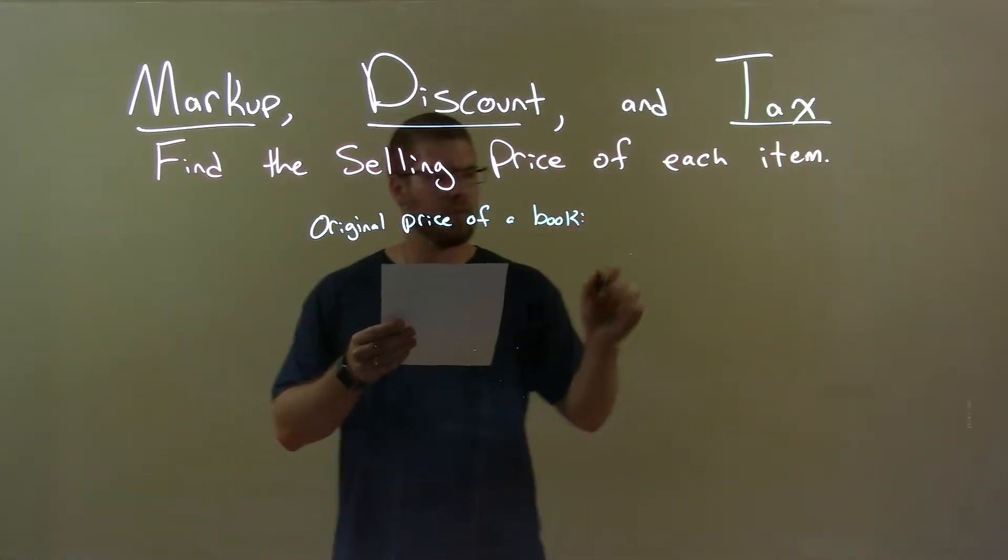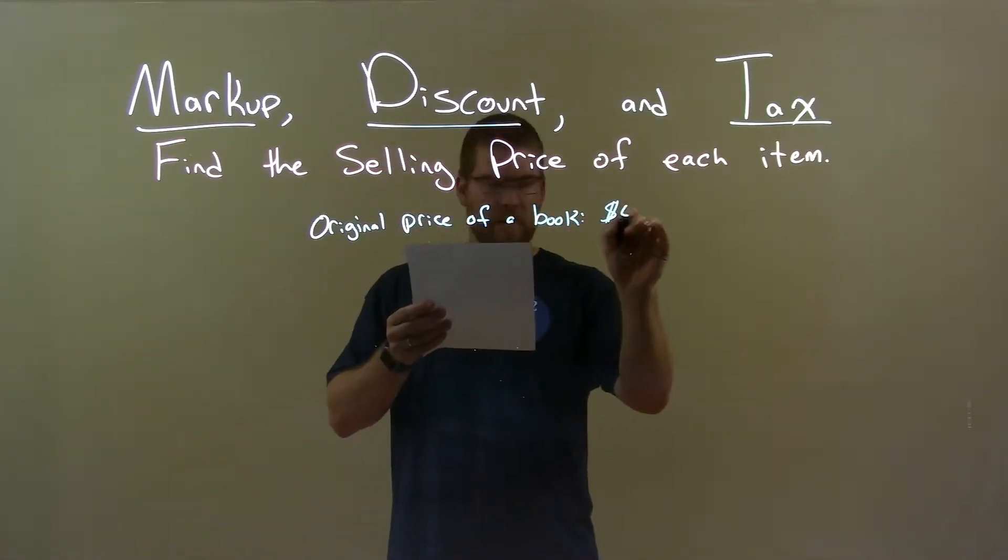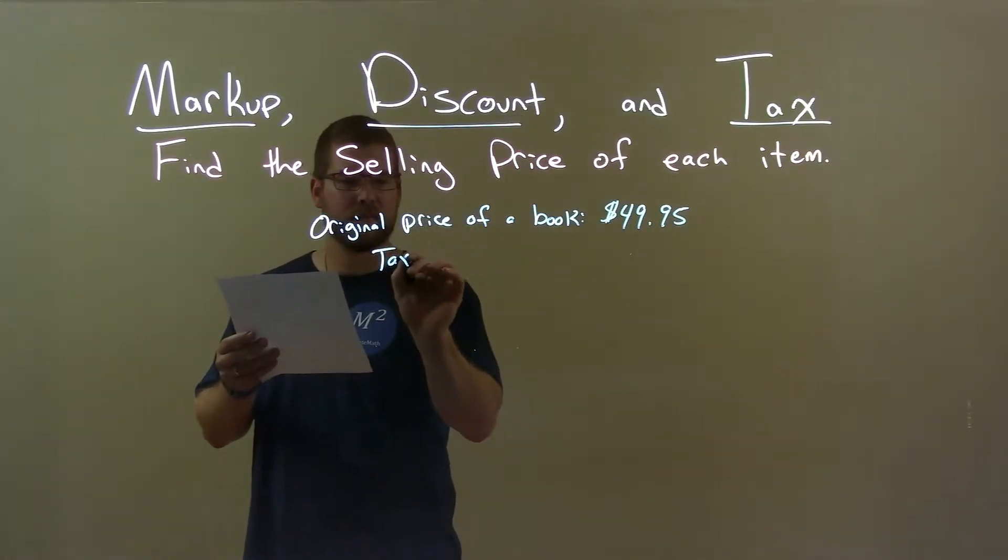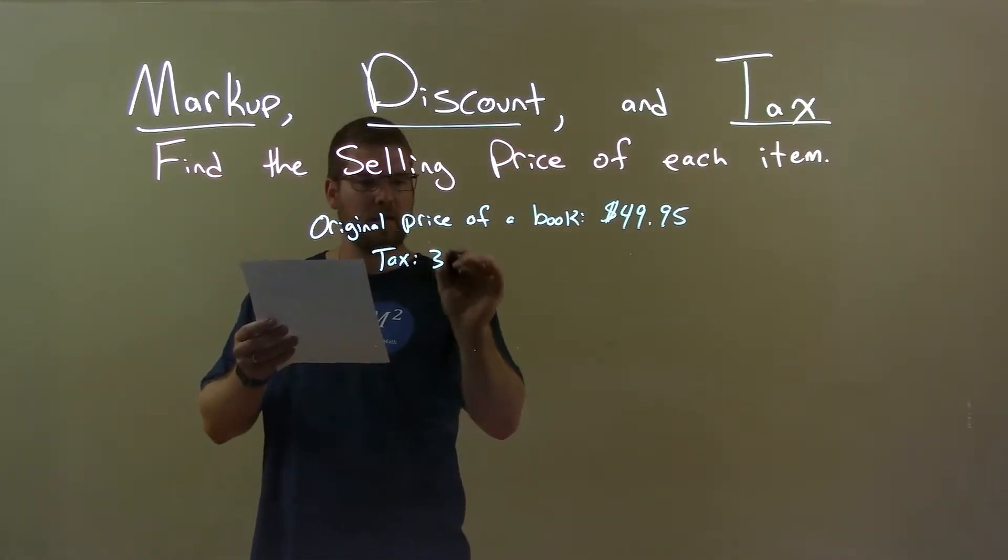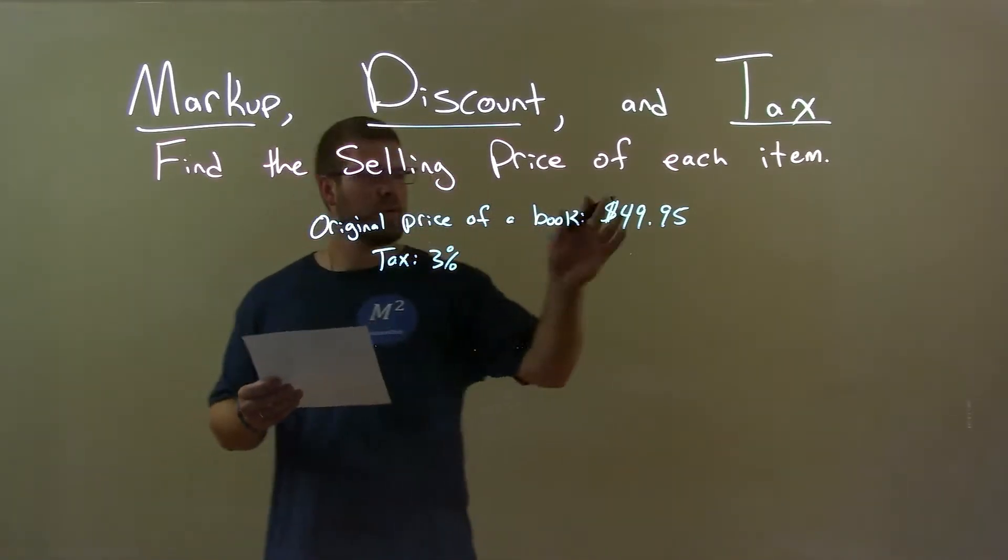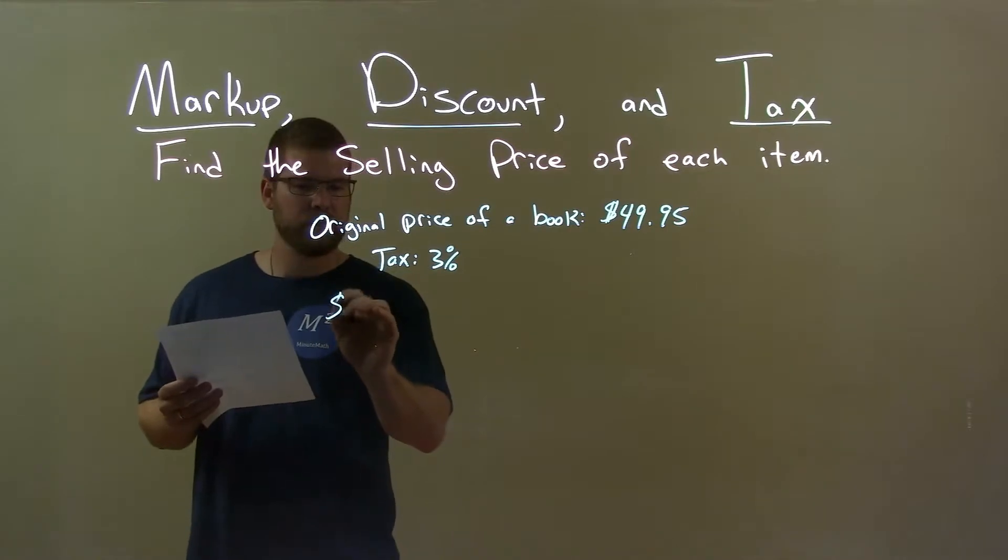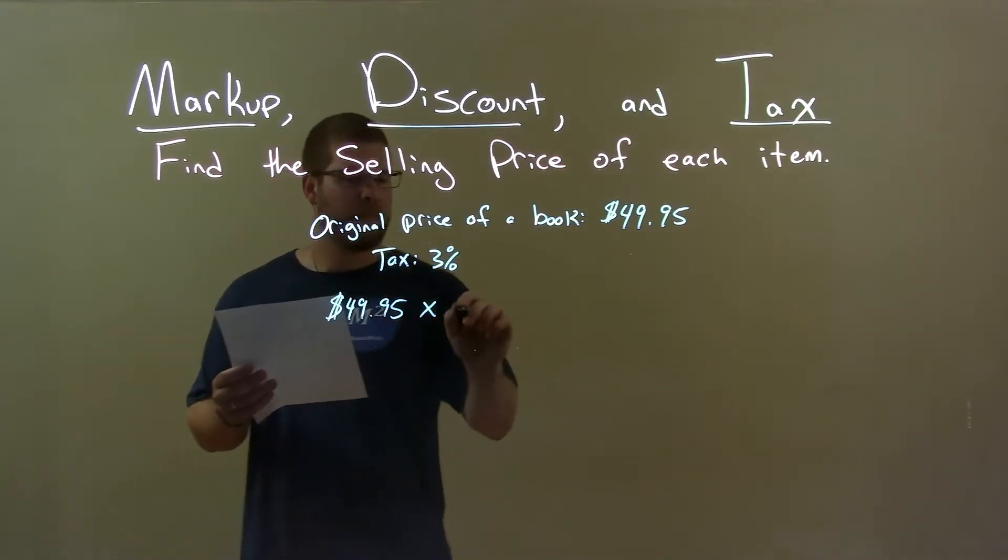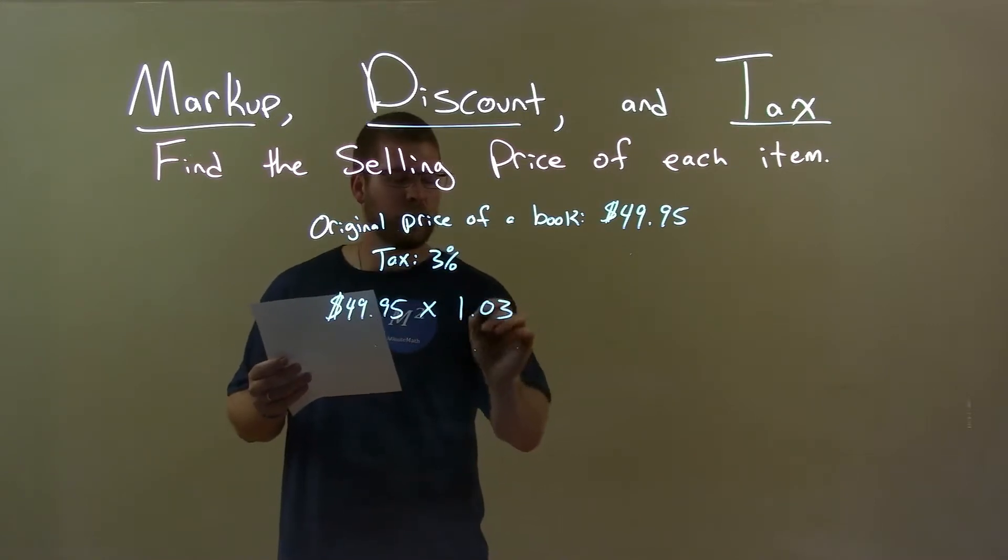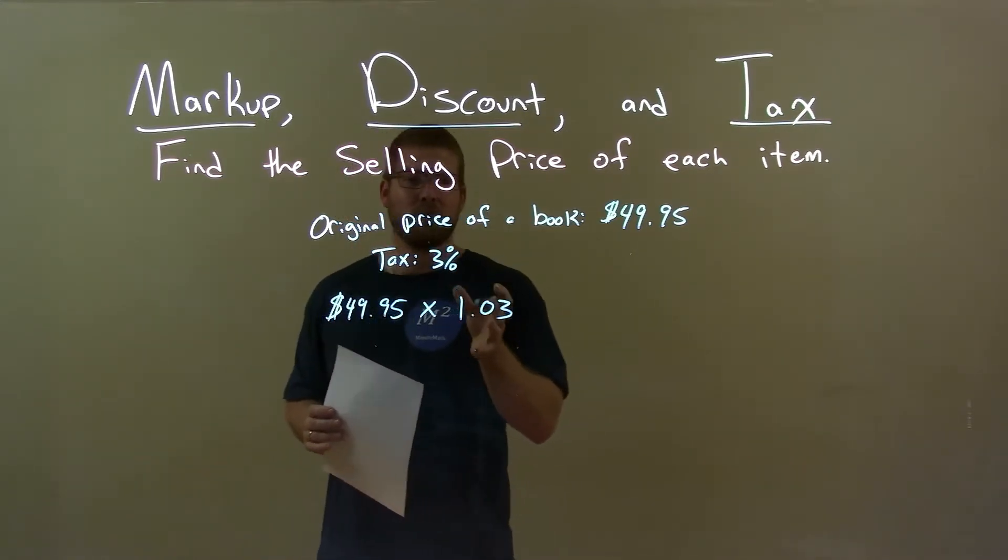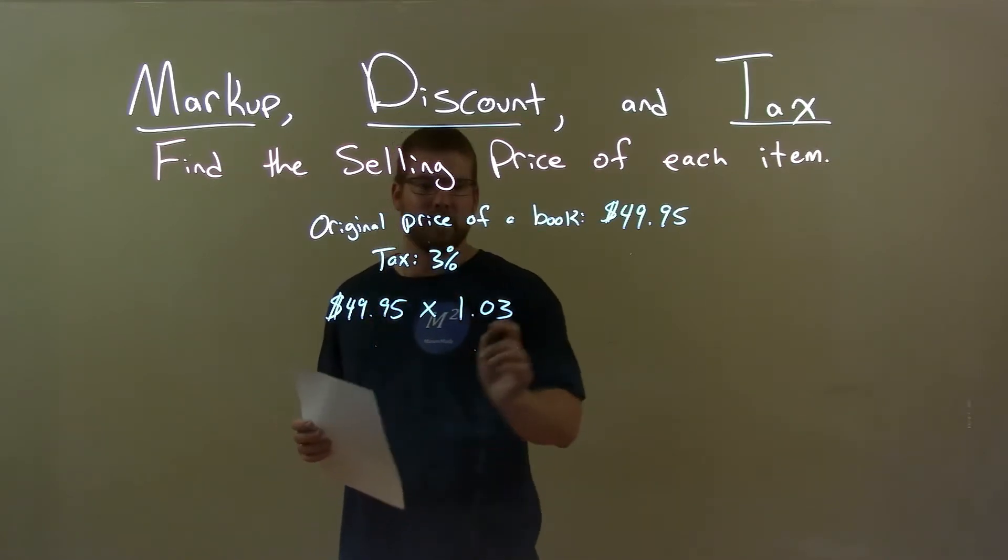The original price of the book is $49.95 and we have a tax of 3%. So what we do is we take the original purchase price of $49.95 and we multiply that by 1.03. That 0.03 represents 3% and 1 makes sure we're also including the original purchase price.